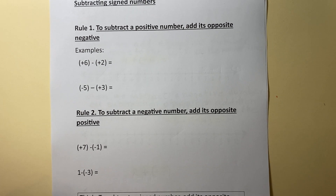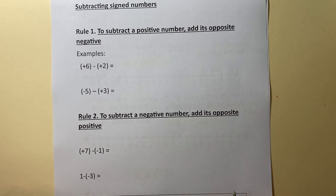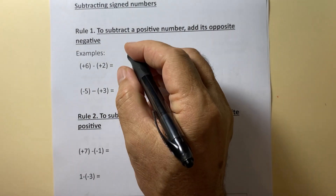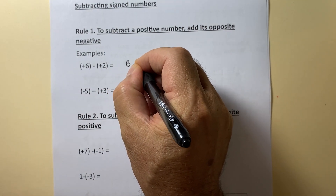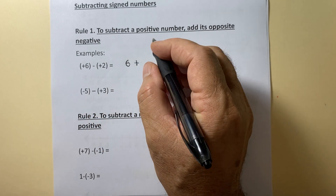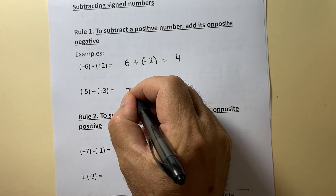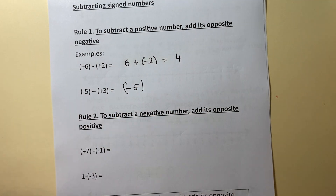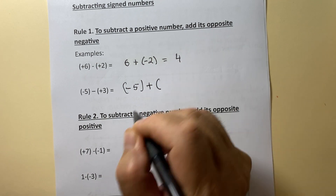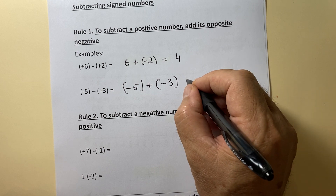Subtracting signed numbers — there are two rules. Rule 1: to subtract a positive number, add its opposite, which is a negative number. So, positive 6 subtract positive 2 — change the subtraction to addition and change the sign of the second number to negative 2. The answer is 4. For negative 5, change the minus sign to plus and change the sign of the second number from plus to minus. The answer is negative 8.